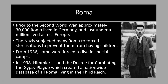Many Roma were subjected to forced sterilizations to prevent them from having children. In 1938, the persecution stepped up. On the 16th of May, Himmler established the Reich Central Office for Combating the Gypsy Nuisance. That same year, Himmler issued the Decree for Combating the Gypsy Plague, which created a nationwide database of all Roma living in the Third Reich. That database would later be used to round up the Roma and put them into forced labor and concentration camps. The Roma gypsies were persecuted more harshly than the Slavic people.